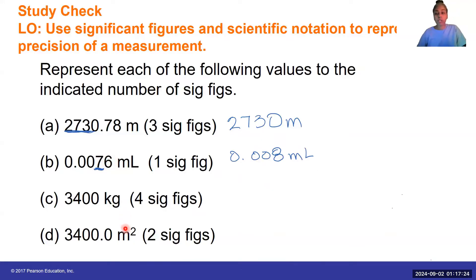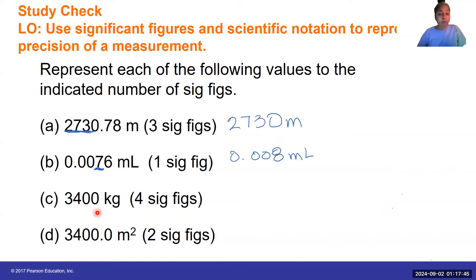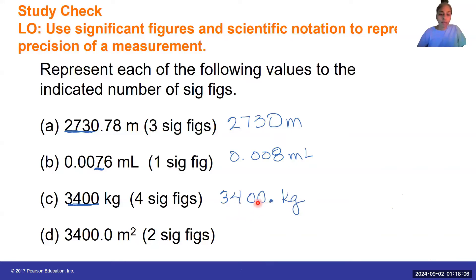What if I wanted to represent this value as four significant figures? I've got 3,400 with zeros on the end. To represent this with four significant figures, I add a decimal place. Alternatively, I could write this in scientific notation, which would be 3.400 times 10 to the 3 kilograms.